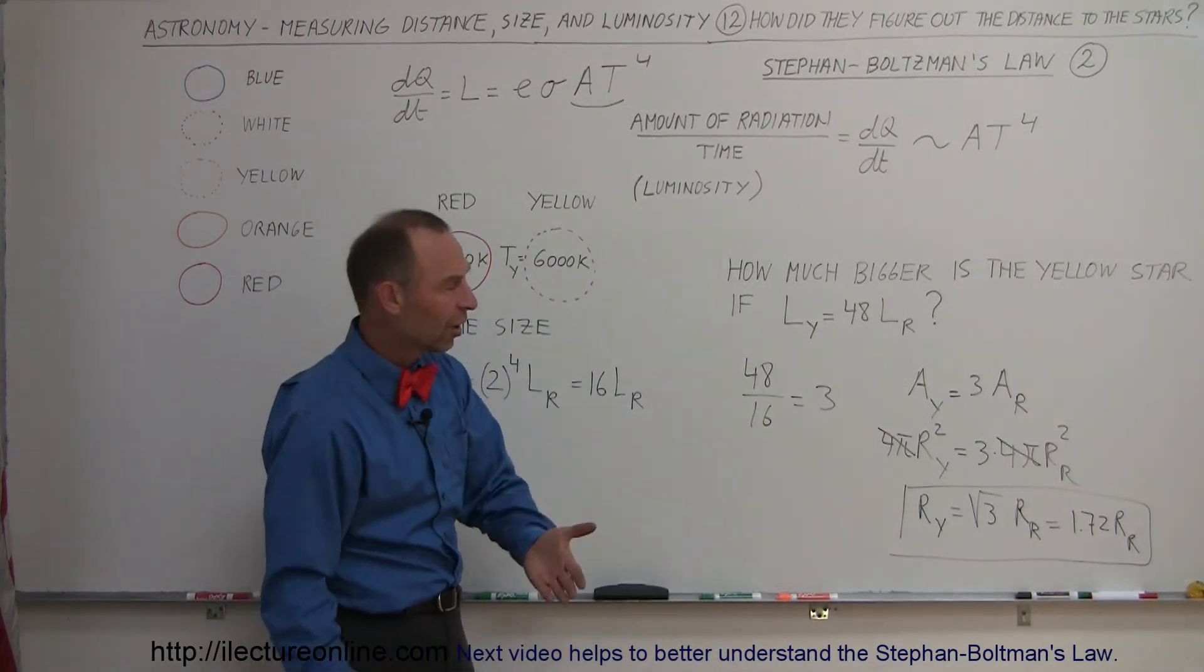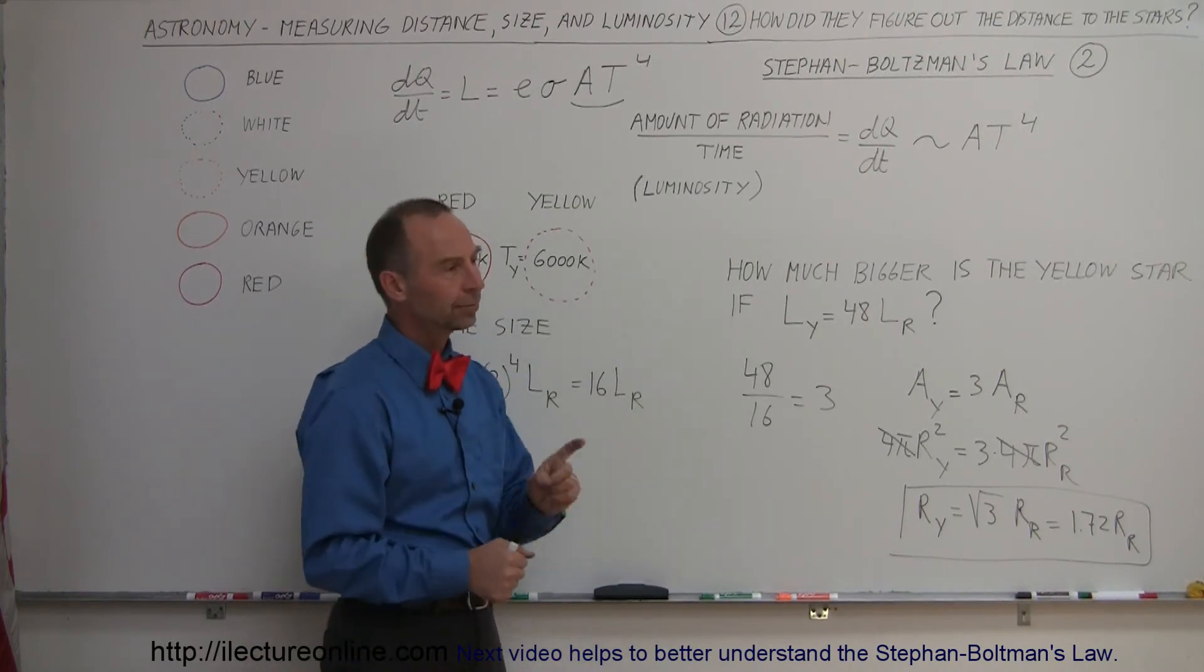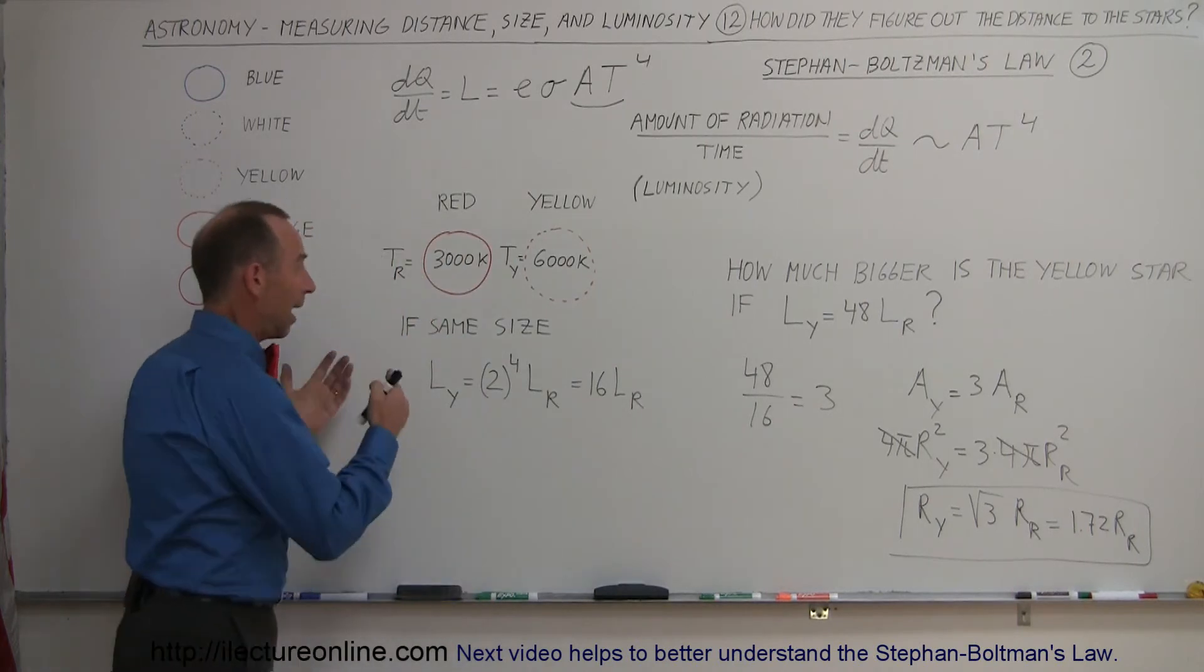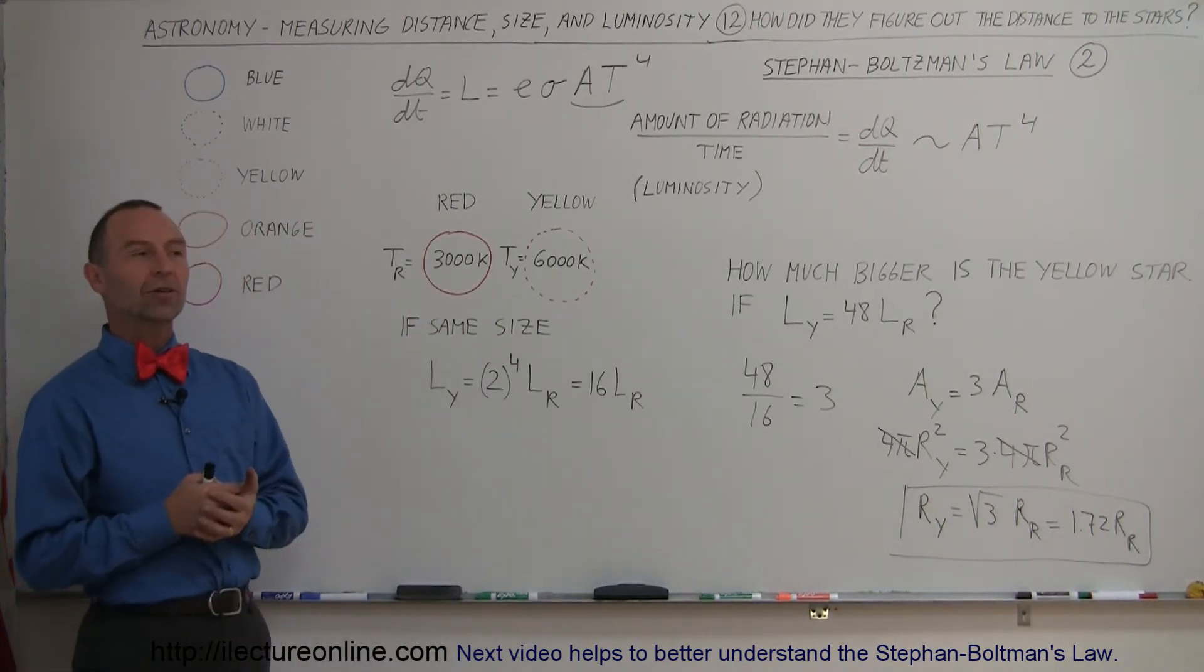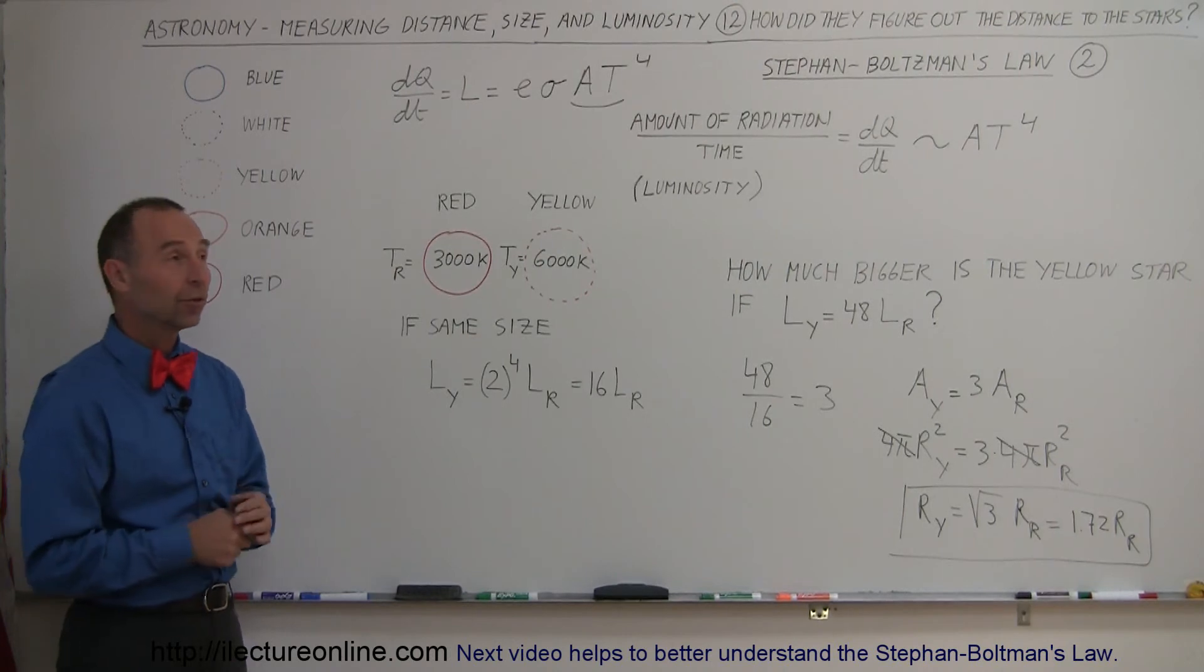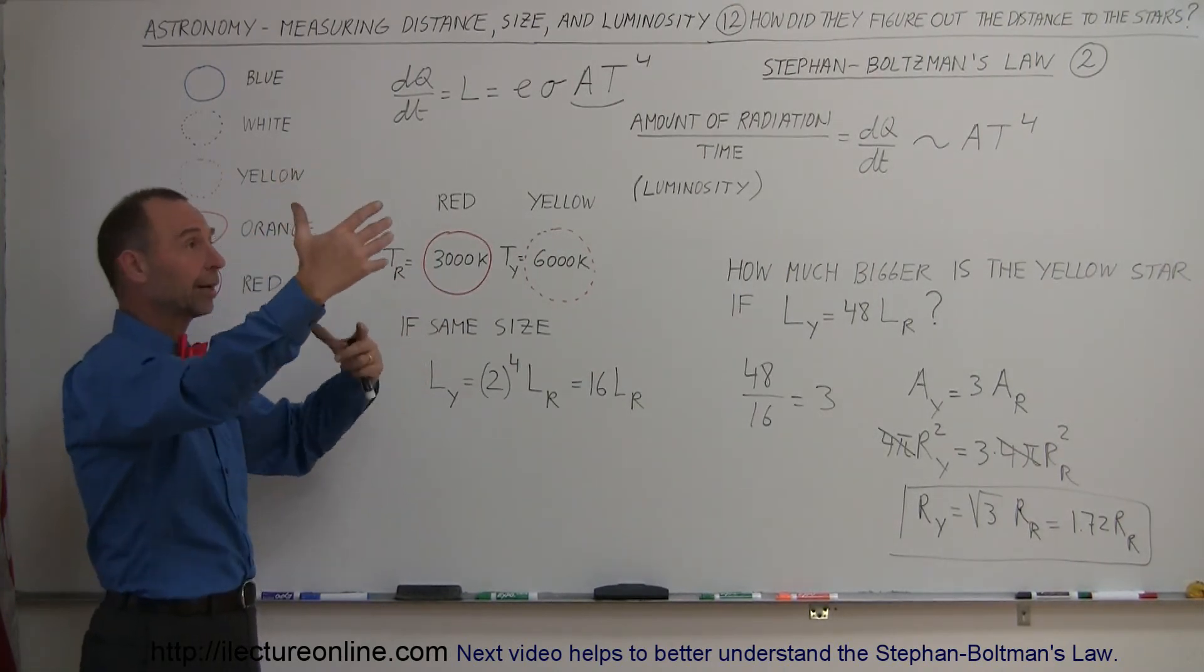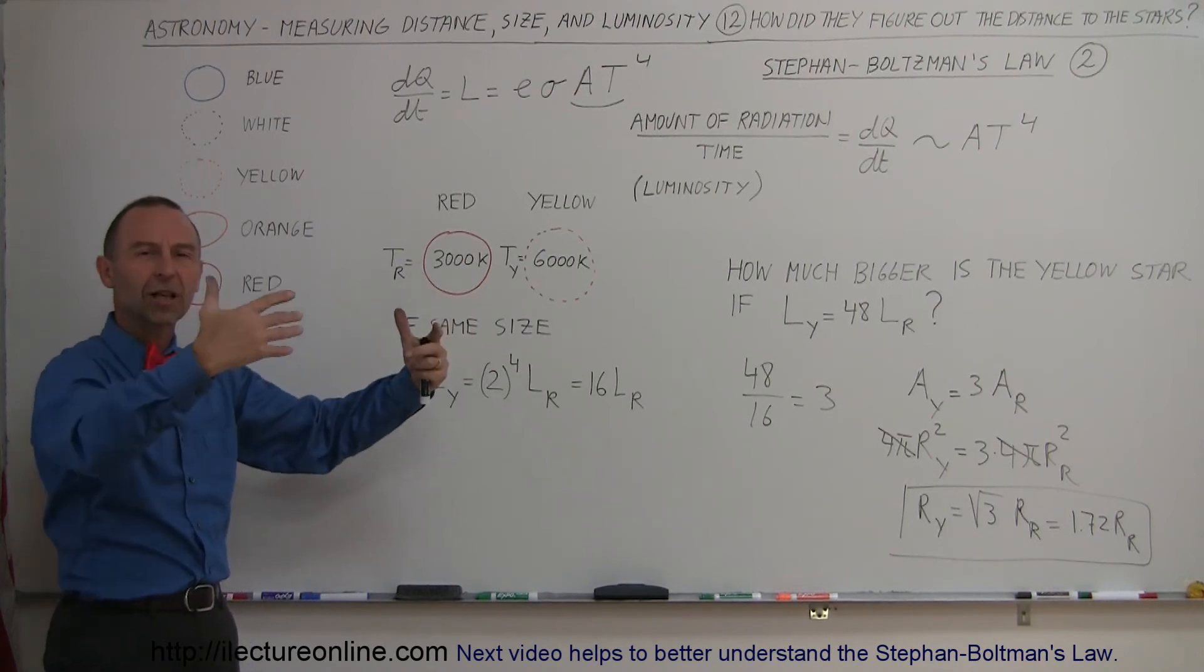Great stuff! One big problem: how do we know the actual luminosity of the stars if we don't know how far the stars are? Because we look at two stars, we don't know how far they are. One appears a lot brighter than the other, but it could be because it's a lot closer.